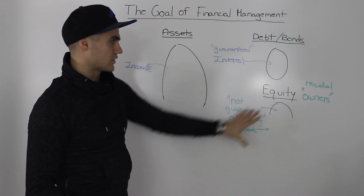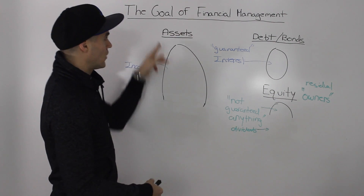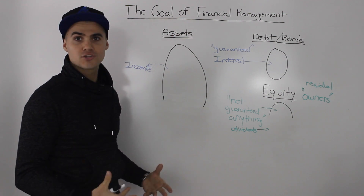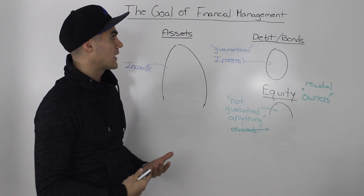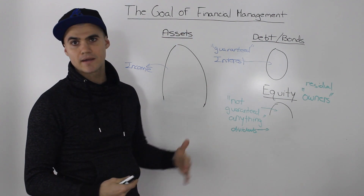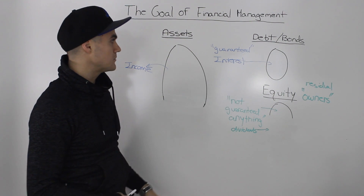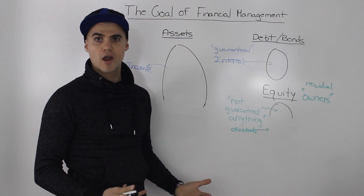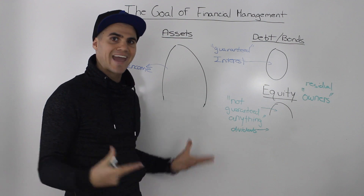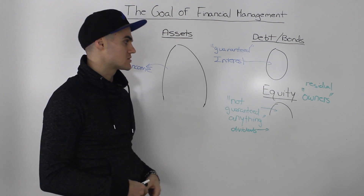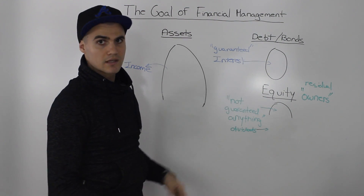So taking all of this into account, let's go back to our original question: what is the goal of financial management? A couple of answers may pop into your head — perhaps it's to maximize sales, minimize costs, maximize profits, avoid bankruptcy, or make an enjoyable work environment. But what is the one answer that's going to encapsulate all of those? Let's look at it from the perspective of the bondholders and the equity holders.